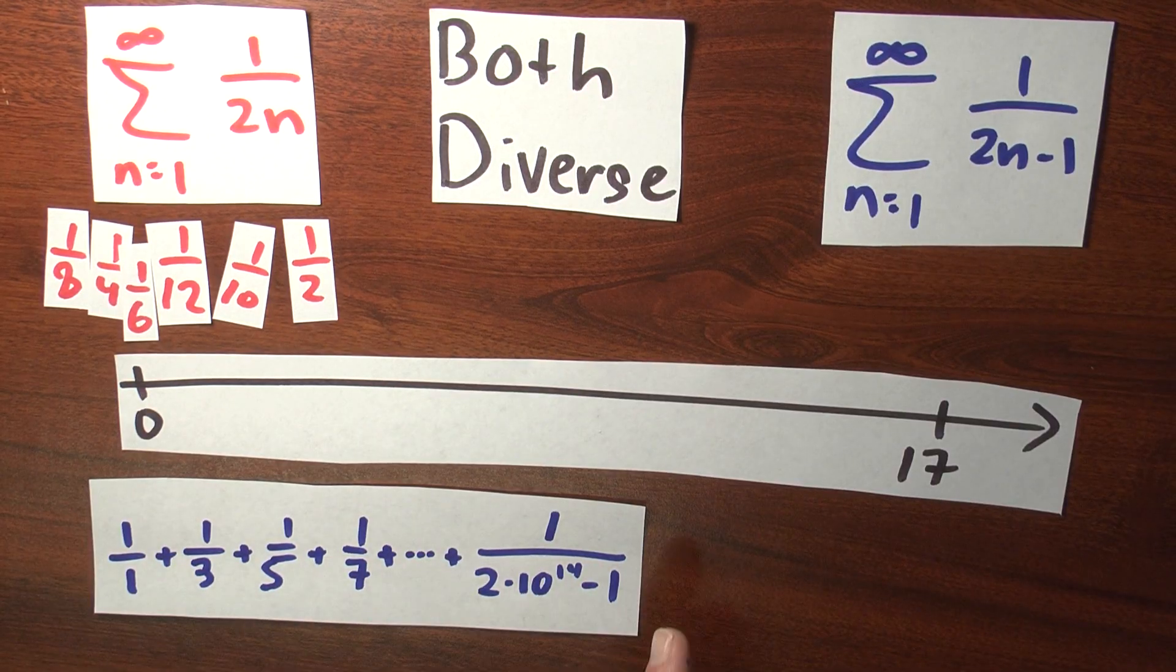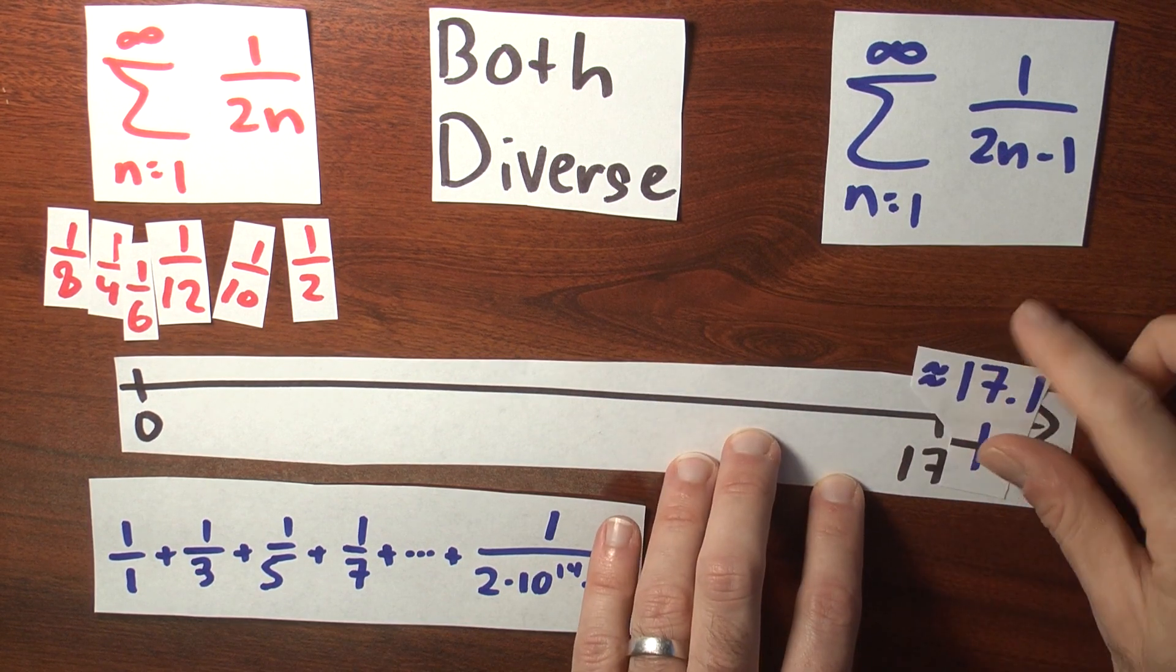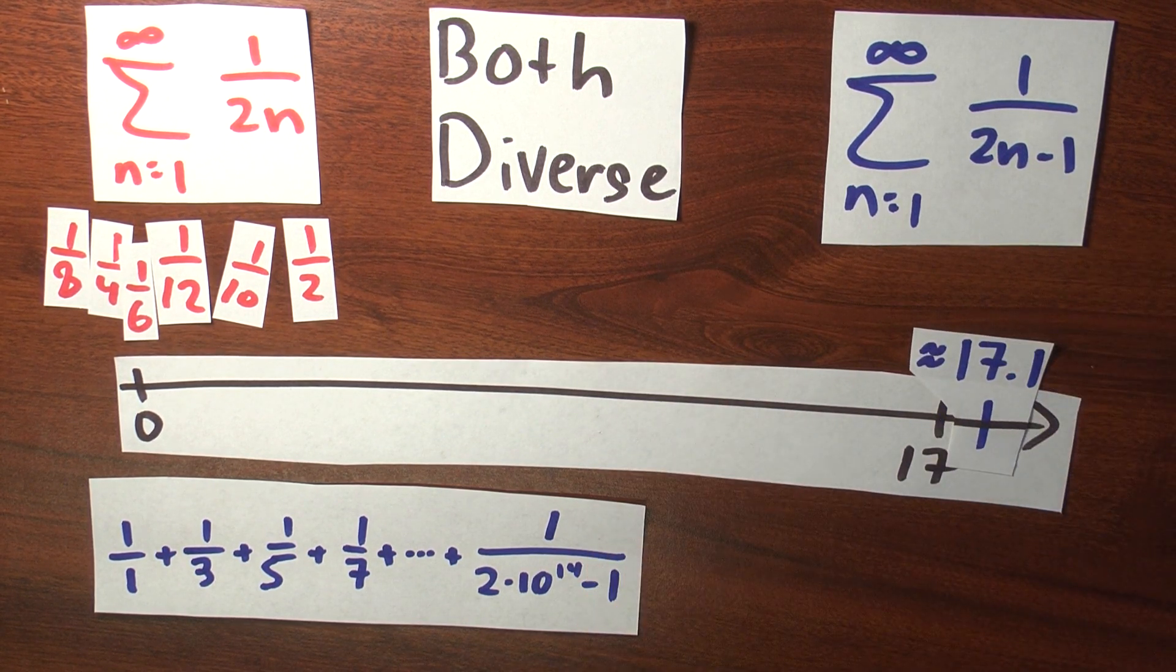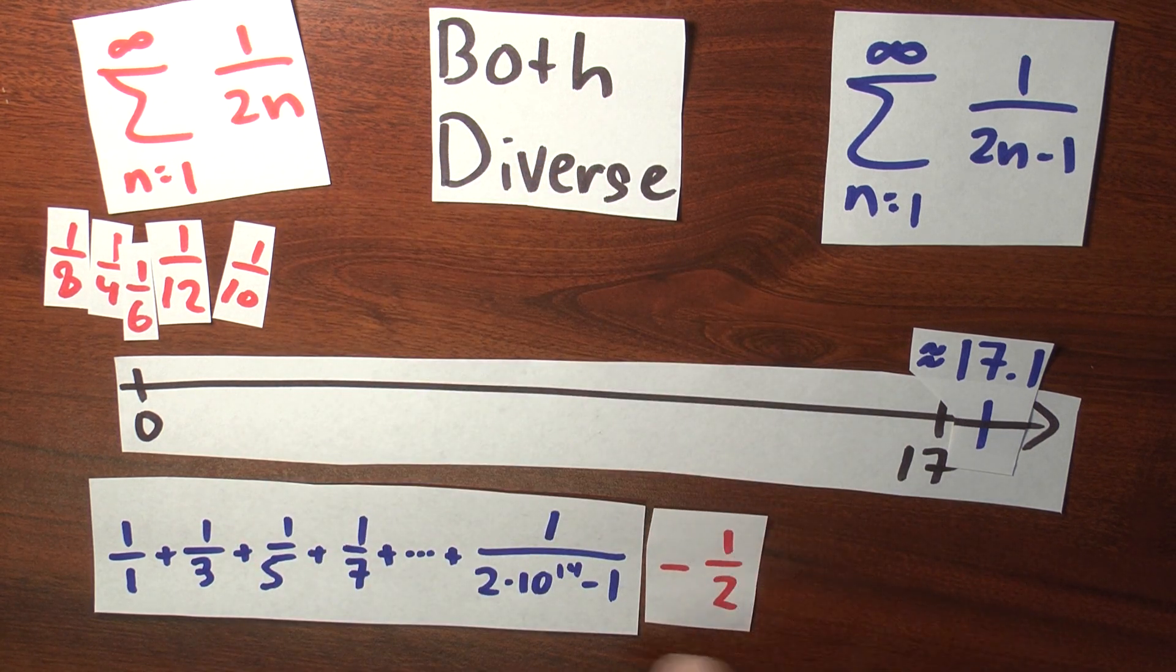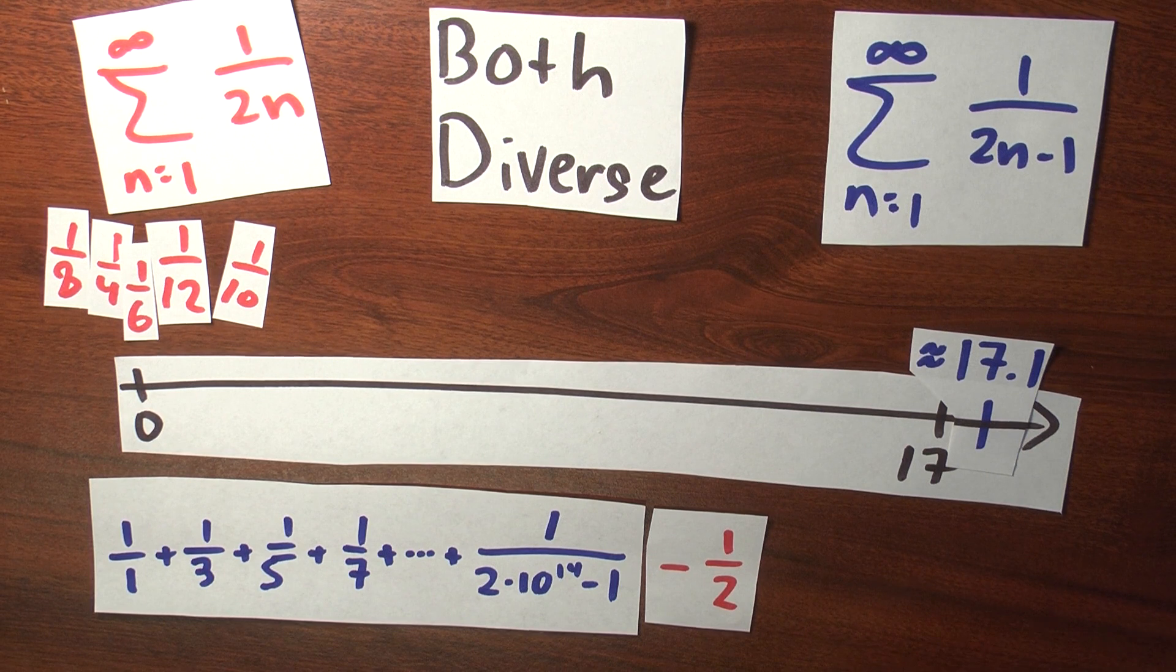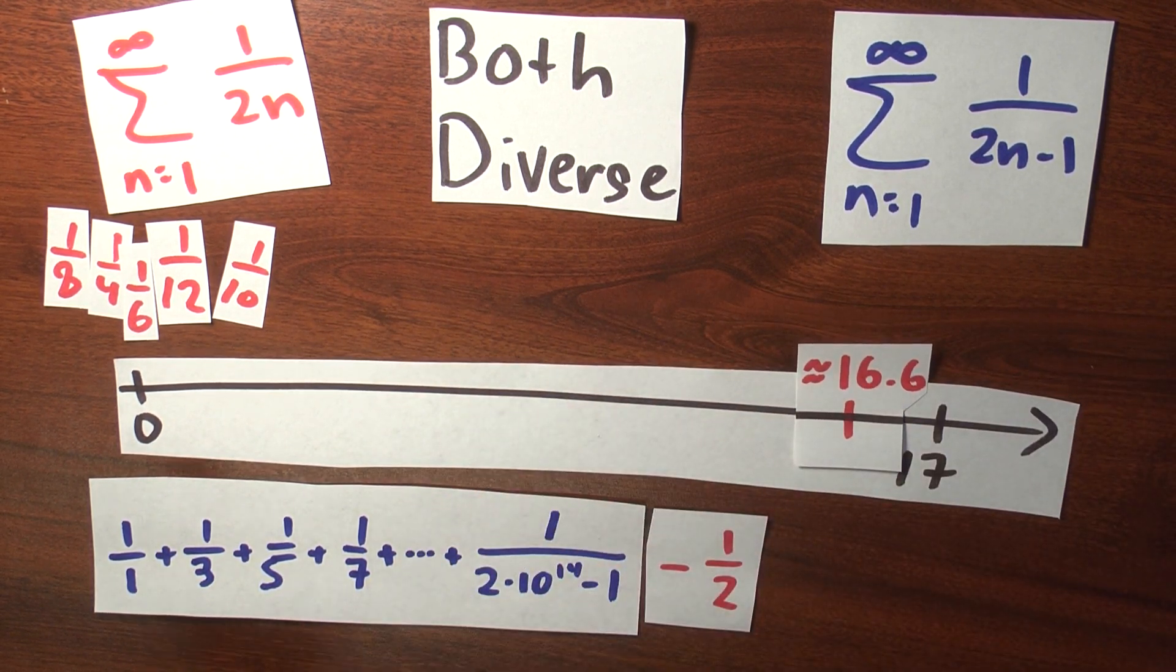And now I'll use some of the negative terms. The sum of these terms from this positive pile was just about 17.1. So if I pick up a half from the negative pile, and I'm going to subtract a half now, that moves me over to about 16.6.